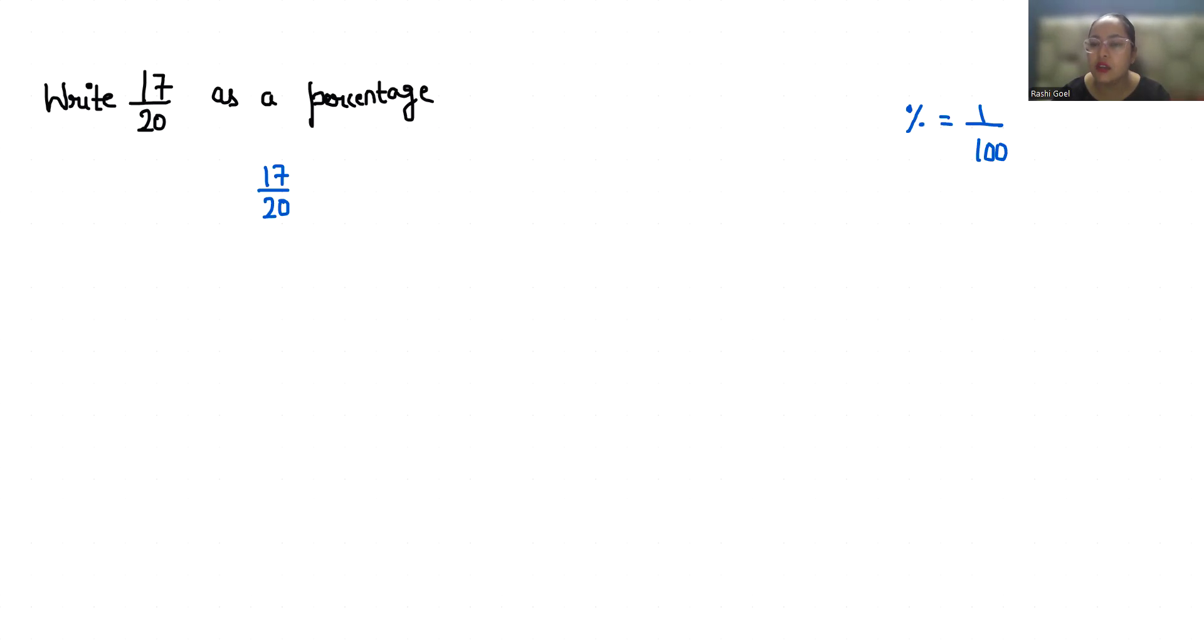So you can remove it and write percentage in terms. Let's convert our denominator in terms of 100. In the table of 20 we know that 100 comes at fifth place, so if you multiply 5 in the bottom you have to multiply its top also.